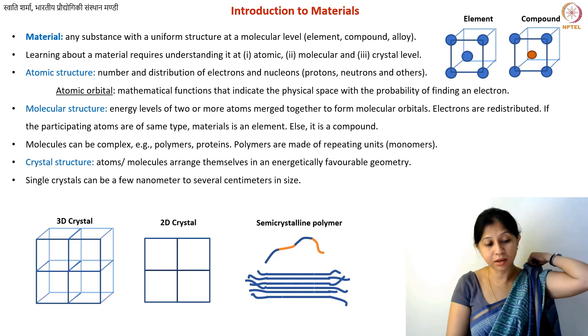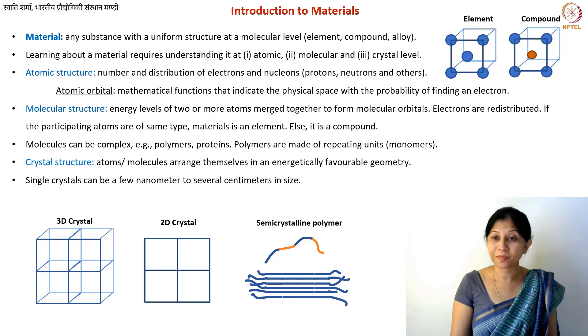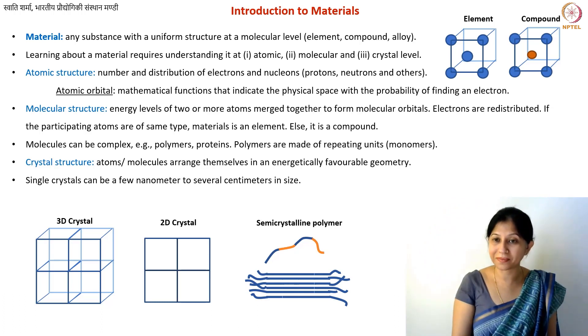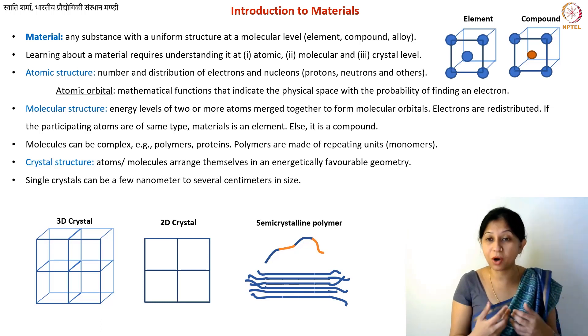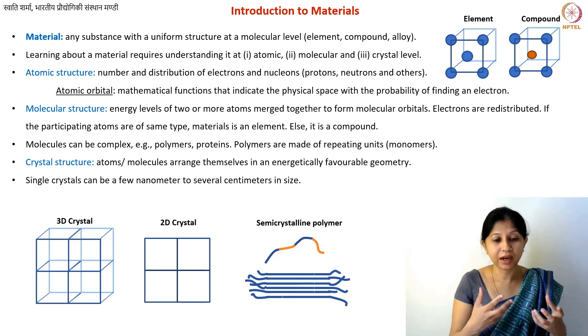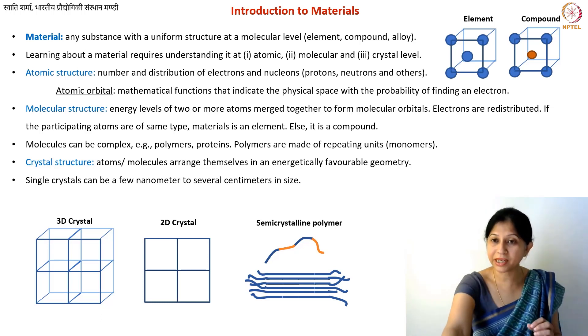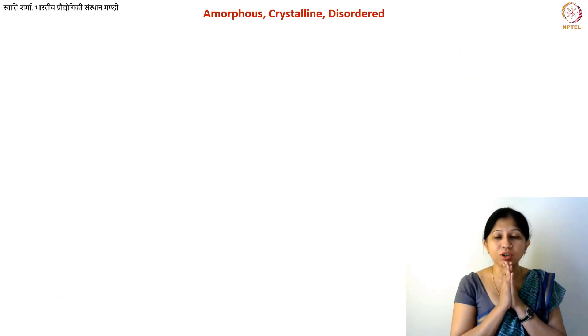A single crystal can be just a few nanometers in size, or sometimes several centimeters long — for example, when you manufacture silicon you actually have single crystals that are several centimeters long. You can have crystals with or without defects, small or large, and different crystal structures are what basically determine the properties of a material, at least when it comes to manufacturability.